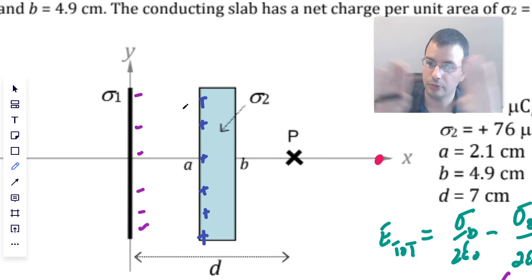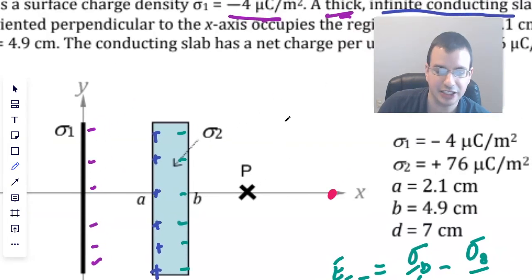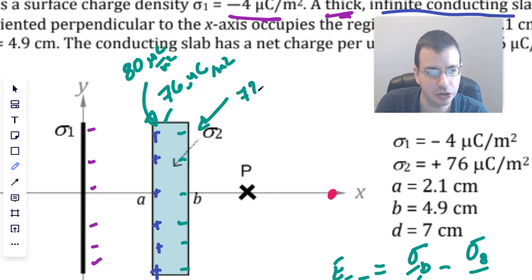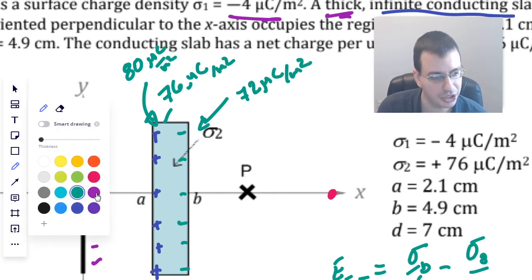This creates a uniform field that doesn't diminish with distance because it's an infinite plane. And so it'll be an equal number of these negative charges will attract an equal number of positive charges here, which means that there's going to be positive charges over there. So you can think of it then as repelling the negative charges over to this side. And since this is a 76 microcoulomb net, when we have the positive charges over here, we're going to have 76 plus 4, which will be 80 microcoulombs per meter squared. And this side you're going to have negative, so it'll be 72 microcoulombs per meter squared.